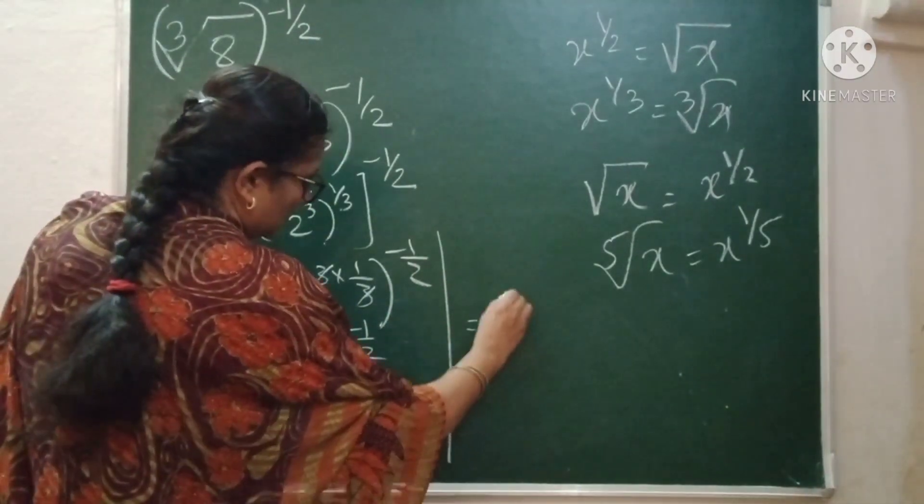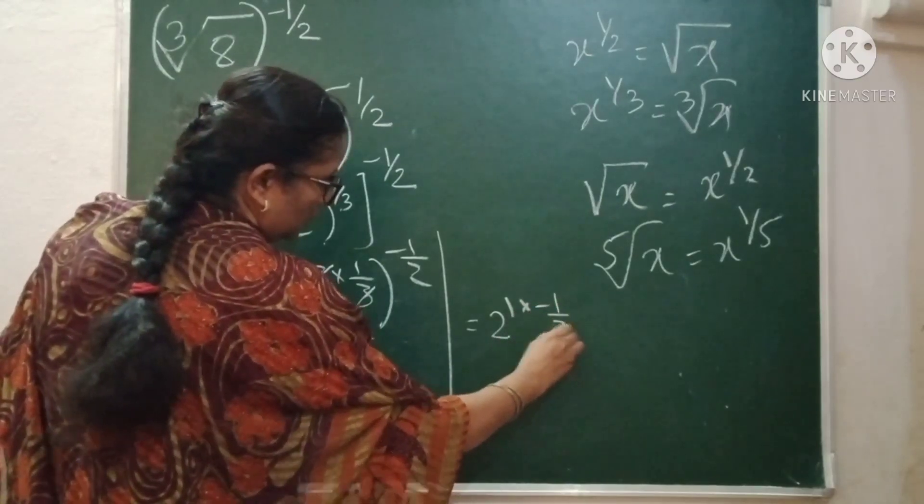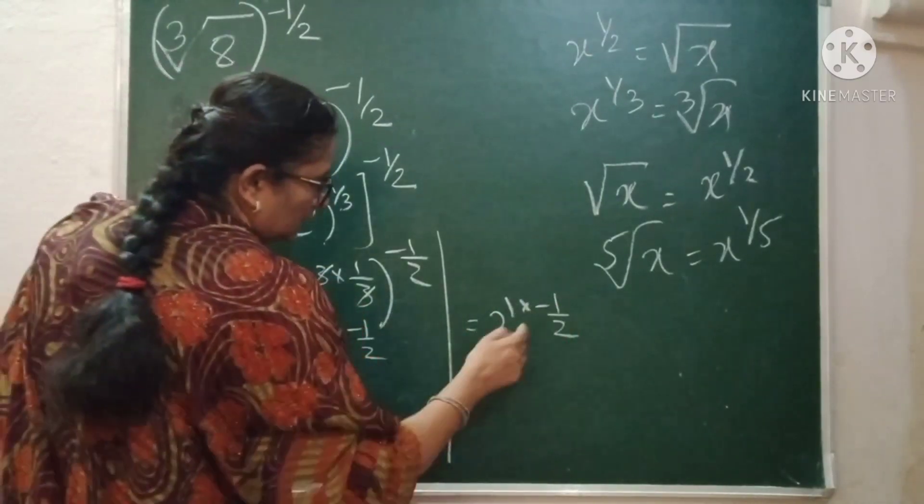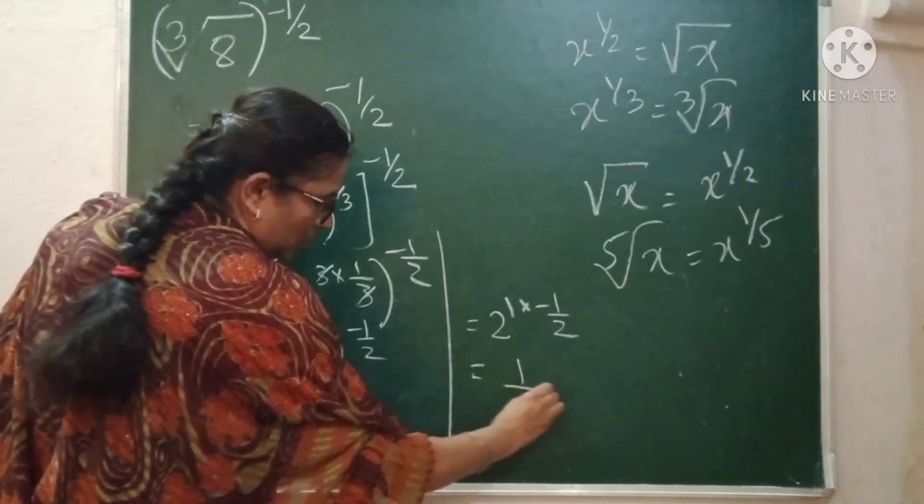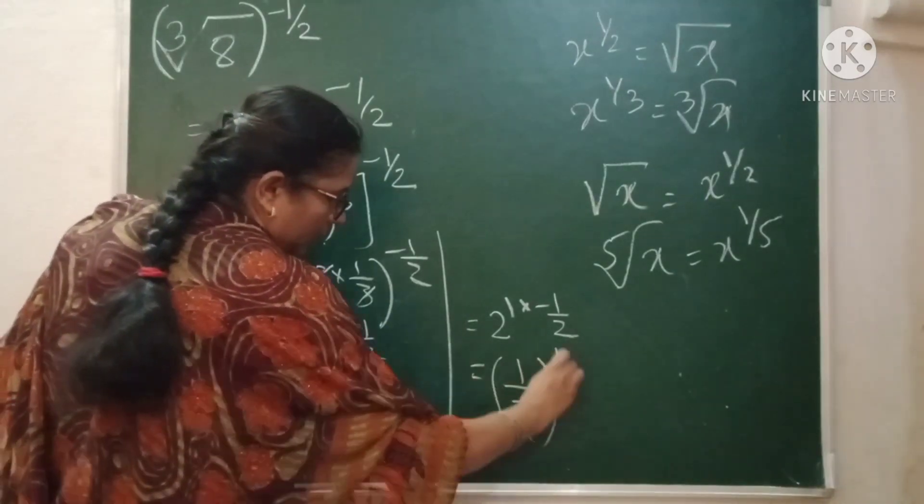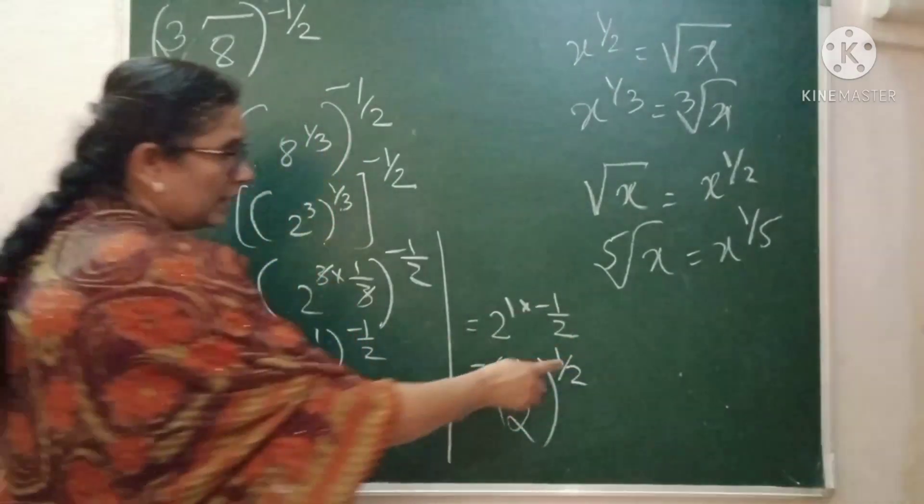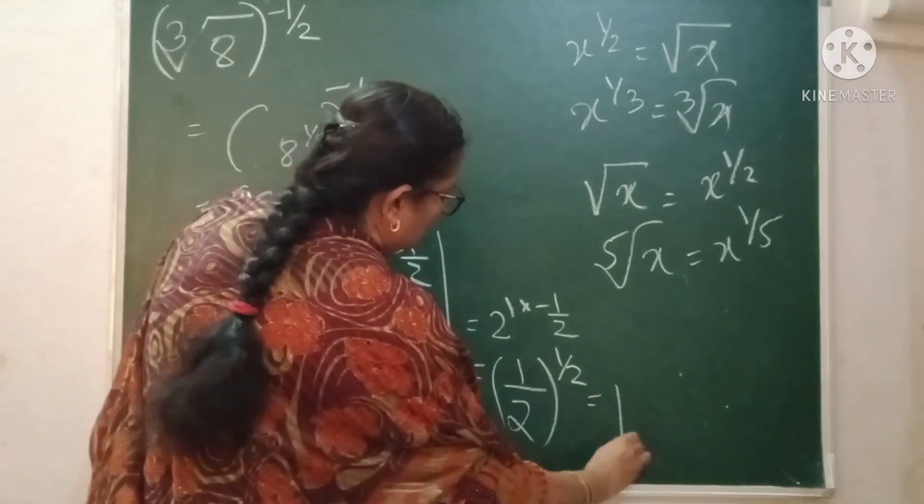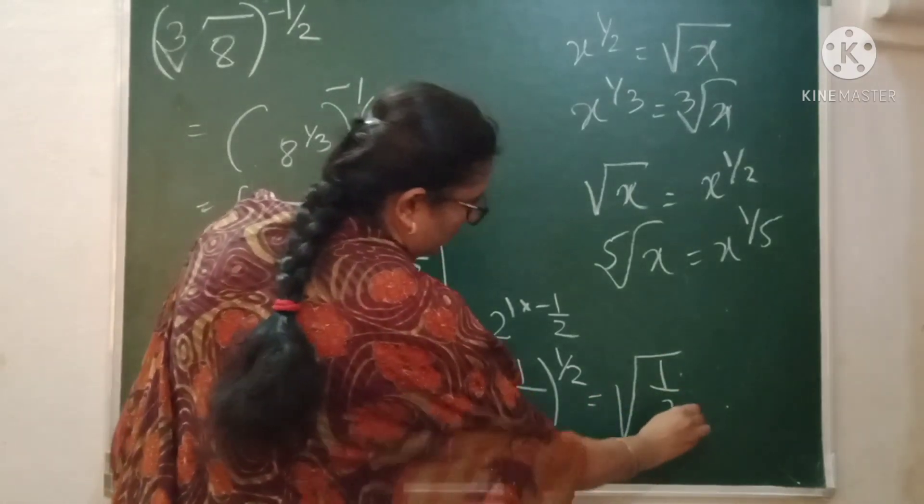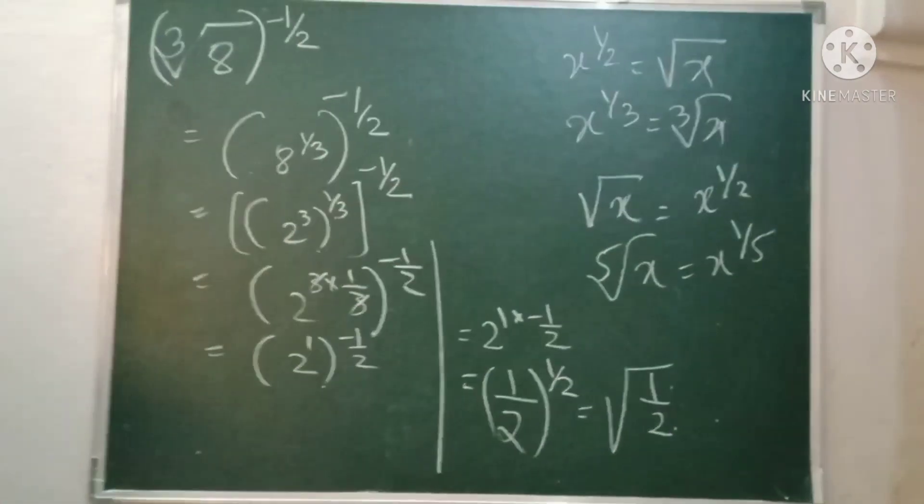And next one, 2 raise to 1 into minus 1 by 2. Now the problem comes with this minus 1. So, it can be written as 1 upon 2 raised to 1 by 2. As we know this one, it can be written as square root of 1 by 2.